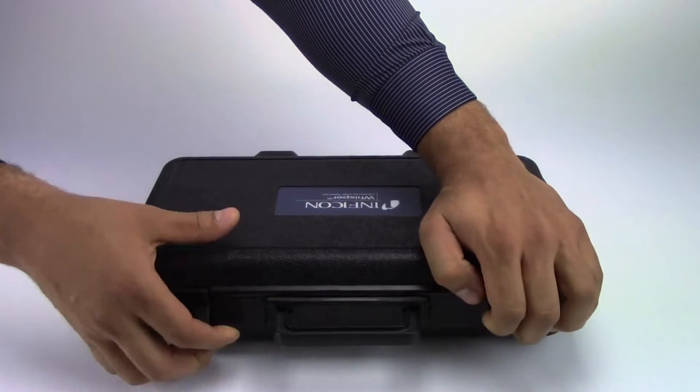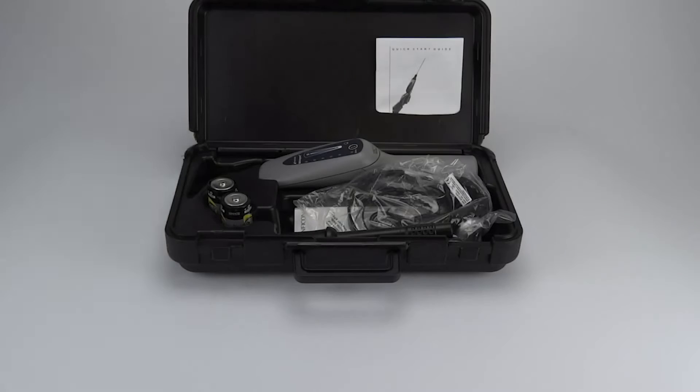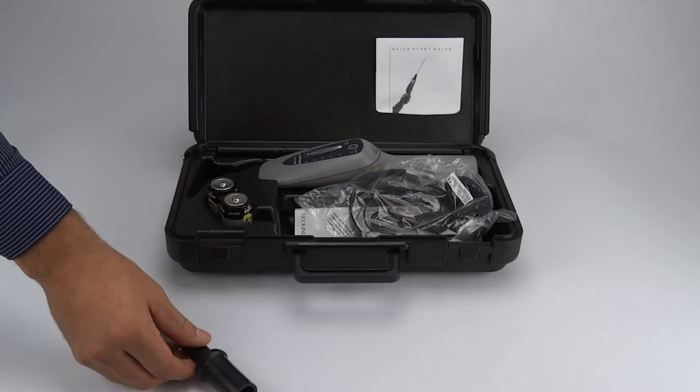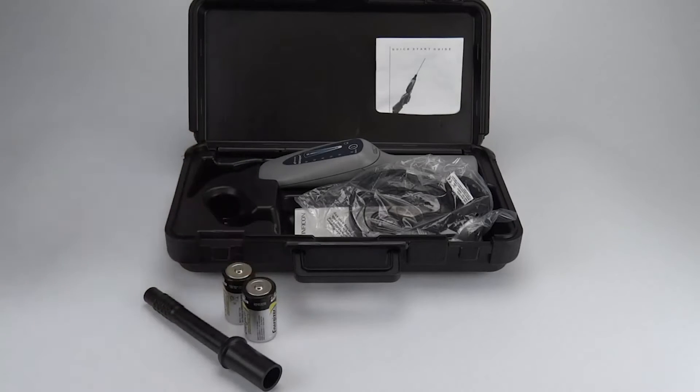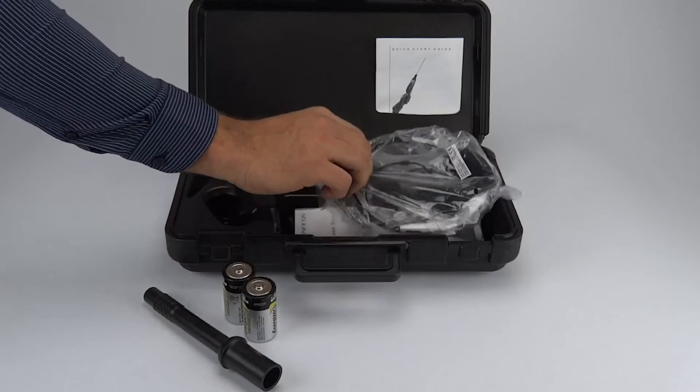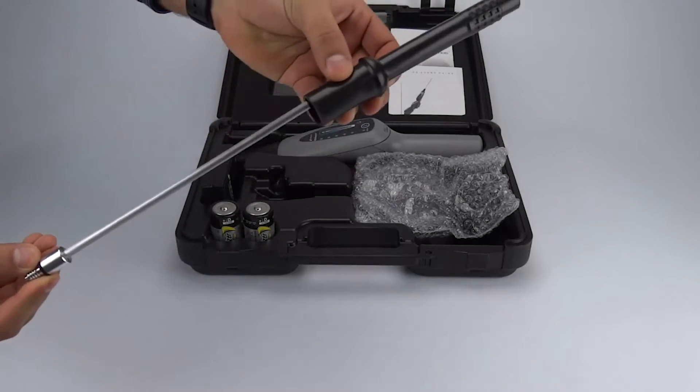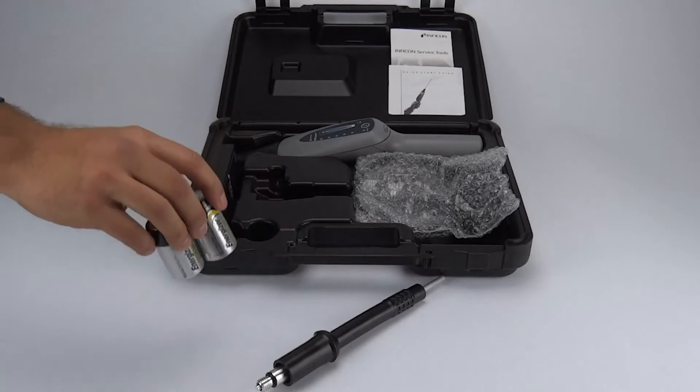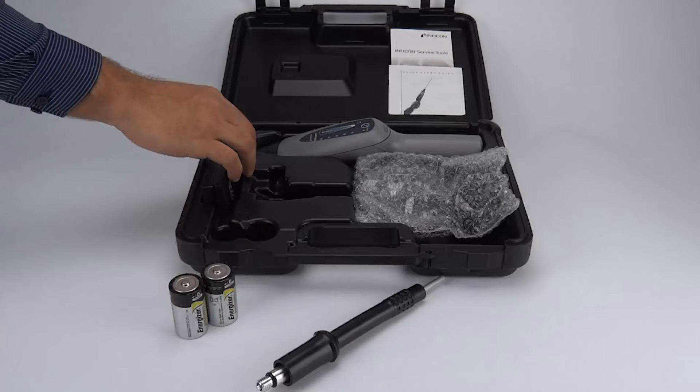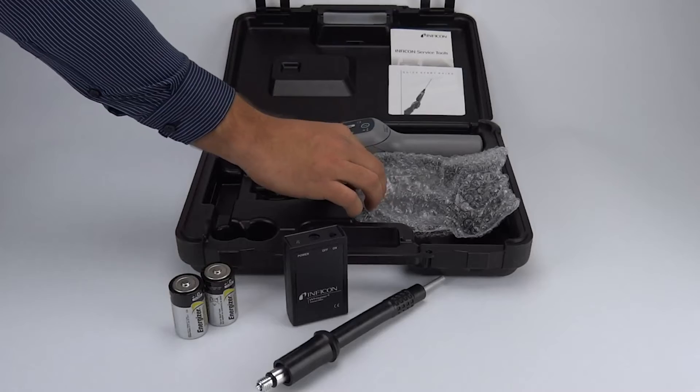Today we're going to show you how to get started and use your new Whisper ultrasonic leak detector. Inside you'll find a rubber extension probe, two D-cell batteries, headphones, and your new Whisper. If you purchase the Whisper with an accessory kit, you'll also find a metal contact probe, rubber extension, two D-cell batteries, a Whisper transmitter, and a premium set of headphones.